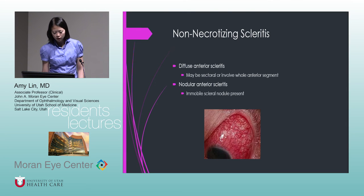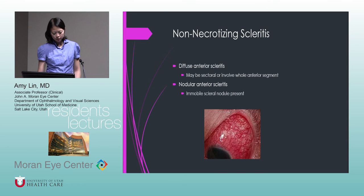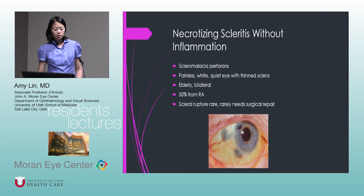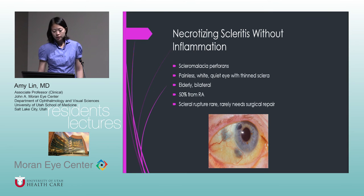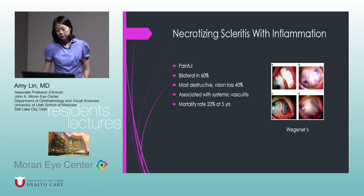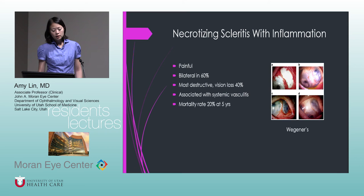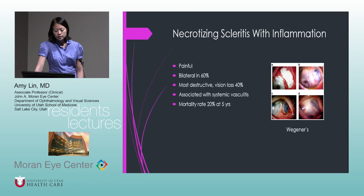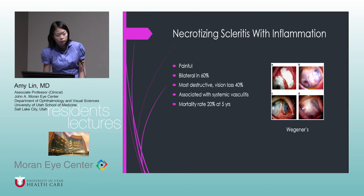Types of scleritis: non-necrotizing scleritis can be diffuse or nodular. Necrotizing scleritis without inflammation is also called scleromalacia perforans — this is a painless type with a white quiet eye but thin sclera, seen in elderly patients, typically bilateral, with 50% being from rheumatoid arthritis. Scleral rupture is rare and it rarely needs surgical repair. Necrotizing scleritis with inflammation is much more serious — it's painful, bilateral in most cases, highly destructive with vision loss in 40%, and has a high association with systemic vasculitis such as Wegener's. The mortality rate is 20% at five years.